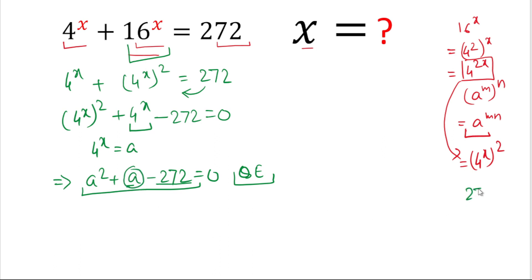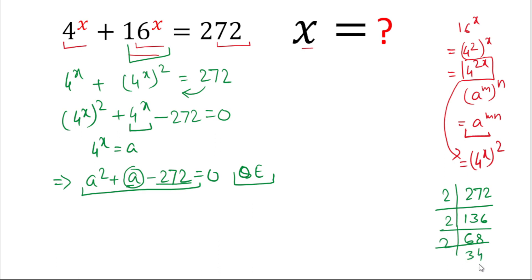Now let's factor 272. Breaking it down: 272 equals 2 times 136, then 2 times 68, 2 times 34, and 2 times 17. So the factors include 16 and 17. The multiplication of 16 and 17 is 272, and their difference is 1. So these are the two numbers we need.